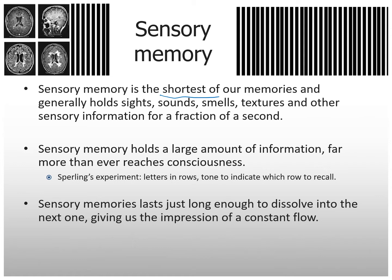Sperling's experiment — which we'll show a slide of, and it's in your book — shows this through rows of letters. He would show a card and then use a tone to indicate which row to recall. Sensory memory lasts just long enough to dissolve into the next one, giving us an impression of a constant flow, just like a motion picture.